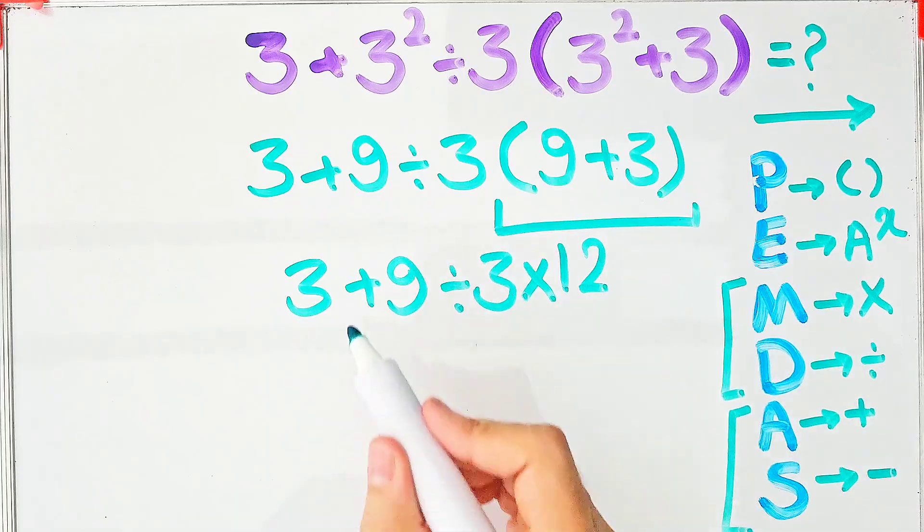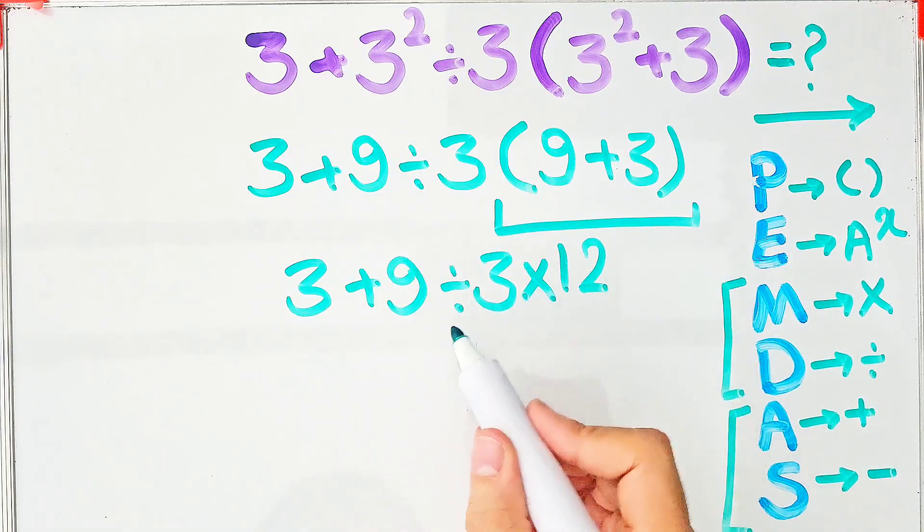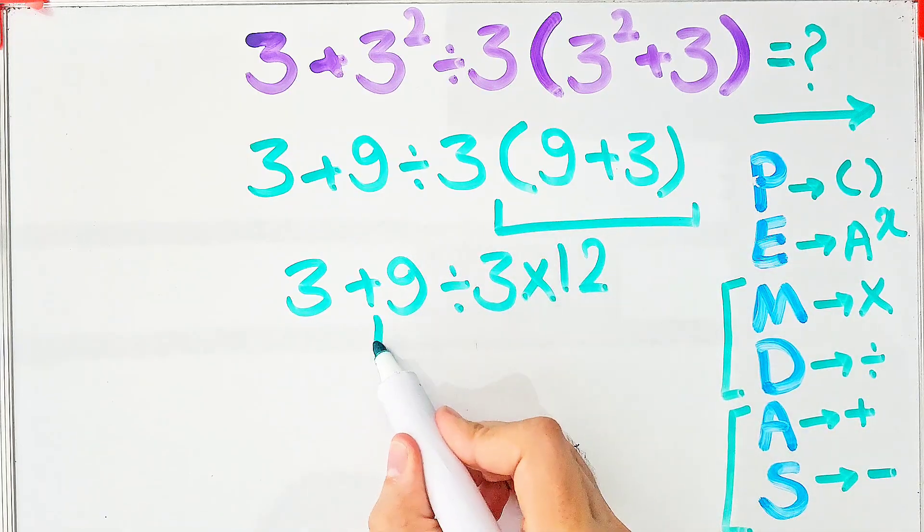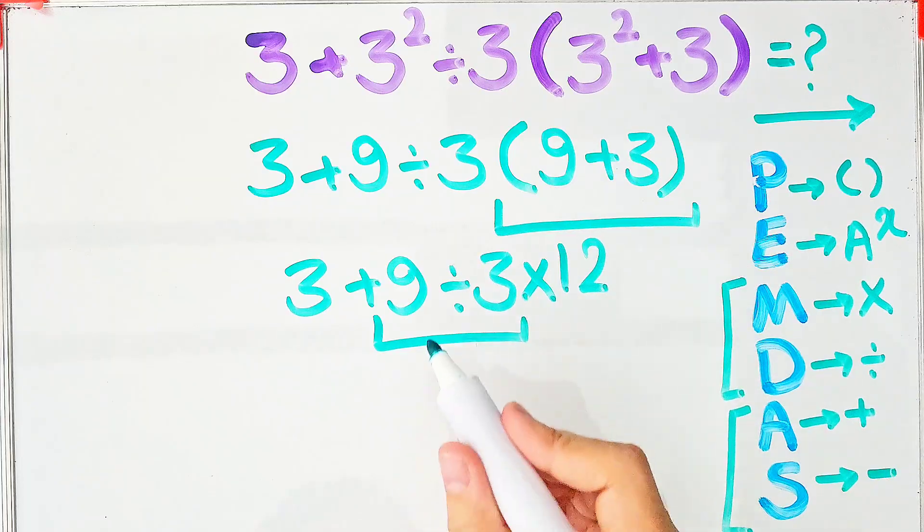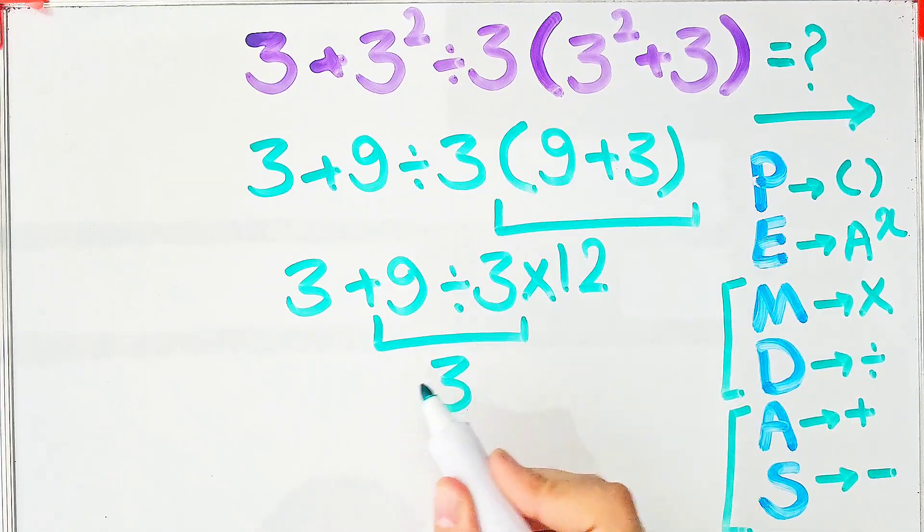Now we have addition, division and multiplication. First we do this division: 9 divided by 3 equals 3. Now we have 3 plus 3 then times 12.